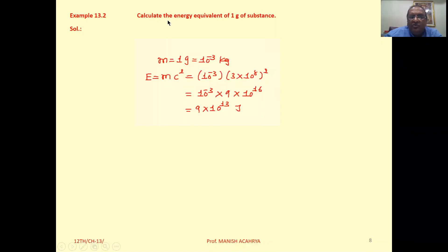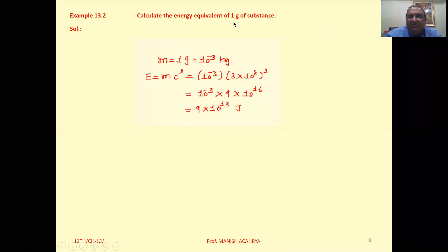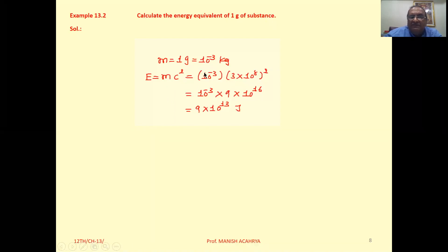Example 13.2: Calculate the energy equivalent of one gram of substance. So mass is one gram, that is 10 raised to minus 3 kilogram.